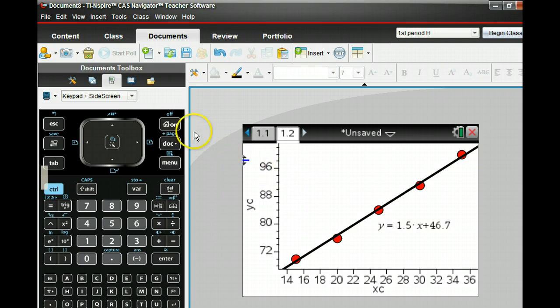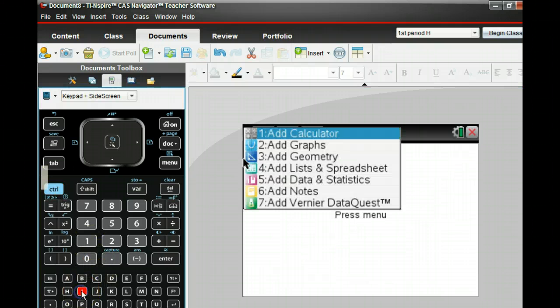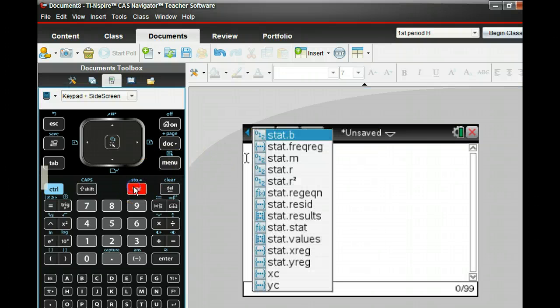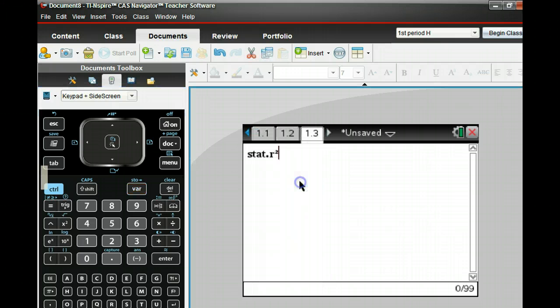I don't want to get too much into statistics, but one thing you could do if you insert a calculator page. Control-I, if you're cool. Calculator. And then hit the variable key right here, and go to the correlation coefficient here. R squared. You press enter.